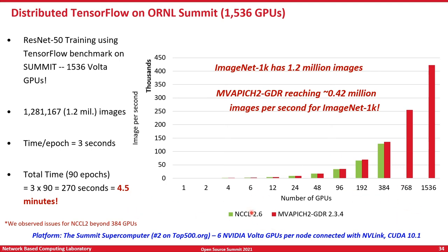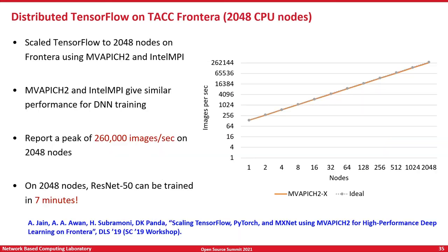Unfortunately, we were not able to scale using NCCL 2.6 beyond 384 GPUs on this HPC system due to certain scaling issues. Now, in the previous slide we looked at GPU-based deep learning training; now we look at the same on a CPU-based system. Here we look at accelerating distributed TensorFlow on Texas Advanced Computing Center's Frontera HPC system on close to 2,048 CPU nodes. We can see near-linear scaling performance and we can potentially train ResNet-50 in just seven minutes — that is some awesome scaling performance.